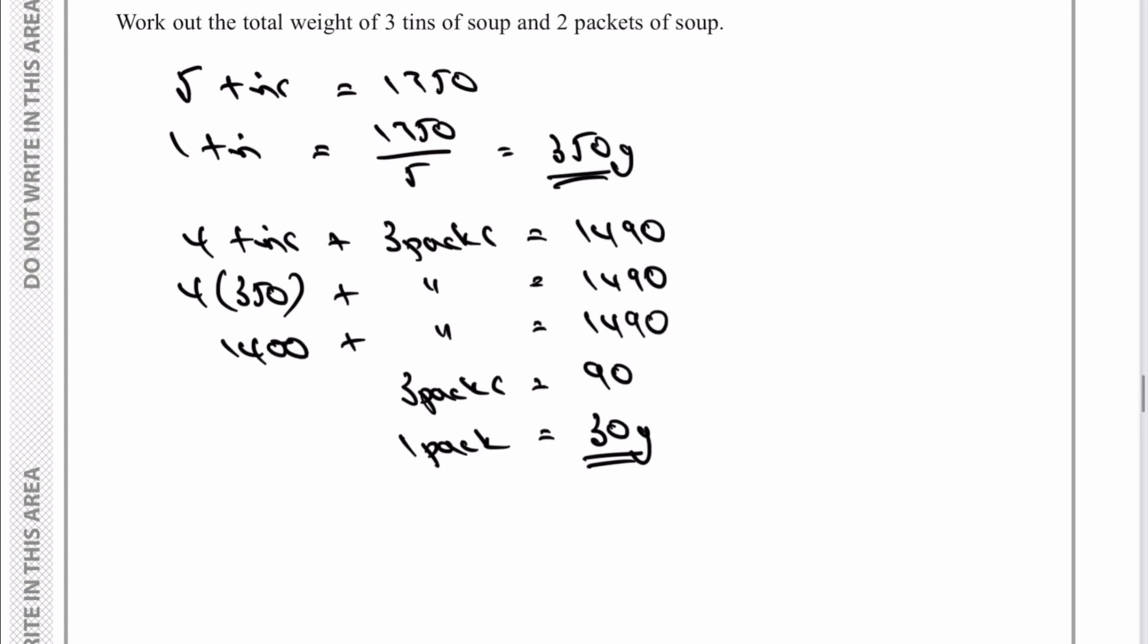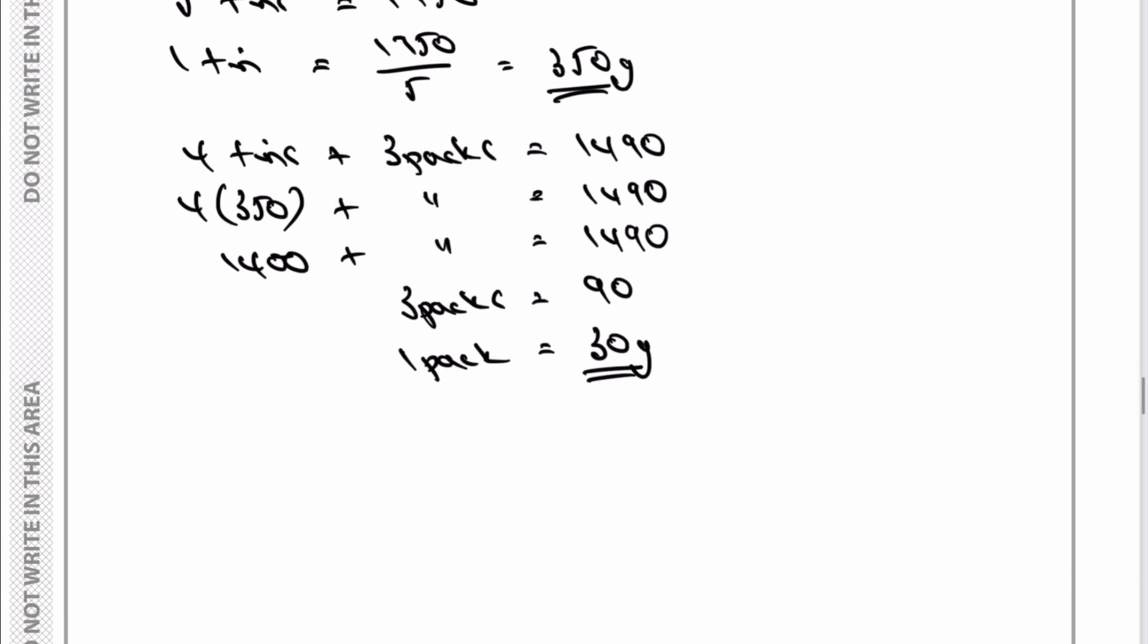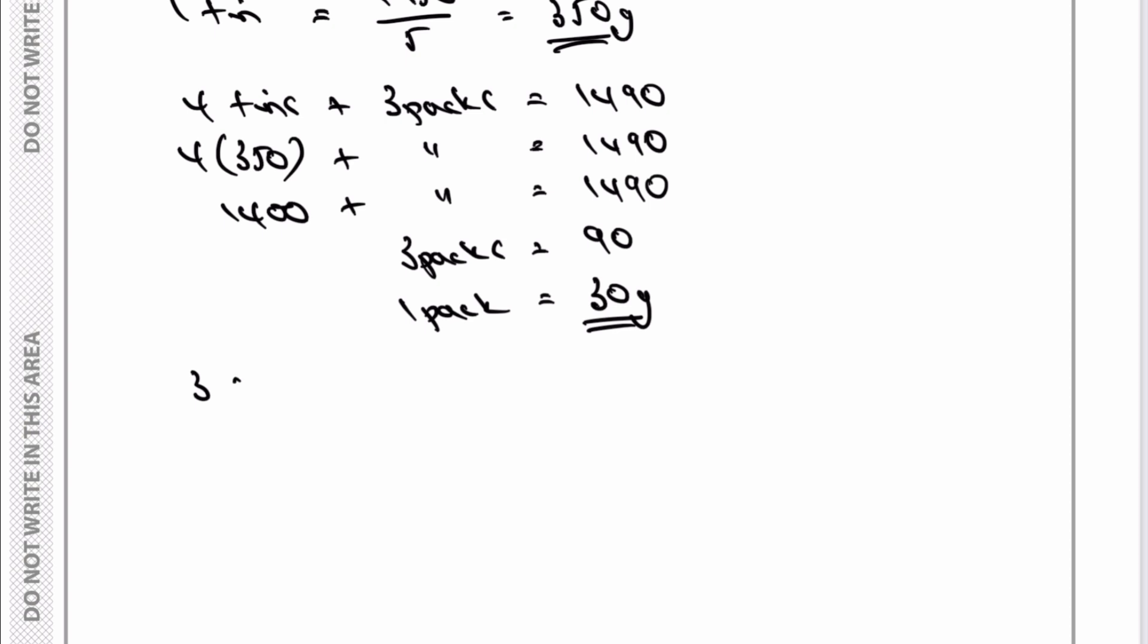And then right at the top there, it says work out the total weight of 3 tins of soup and 2 packets of soup. Well, that's fairly straightforward then. So we've got 3 tins plus 2 packs. Well, 3 tins is going to be 3 times 350, and 2 packs is going to be 2 times 30. And when I calculate all of that out, I'm going to get 1,110, which is the answer to this particular question. That's 1,110 grams in total, and that would be the answer.